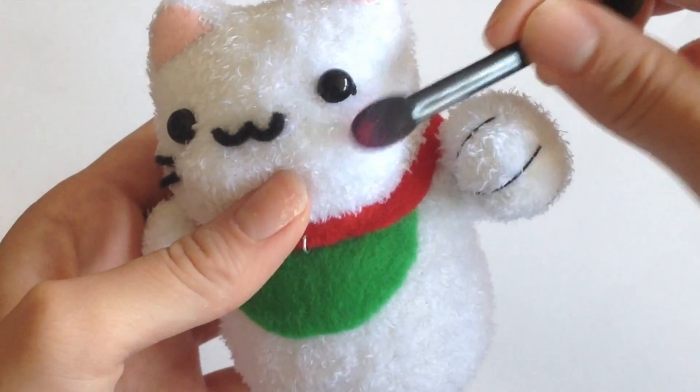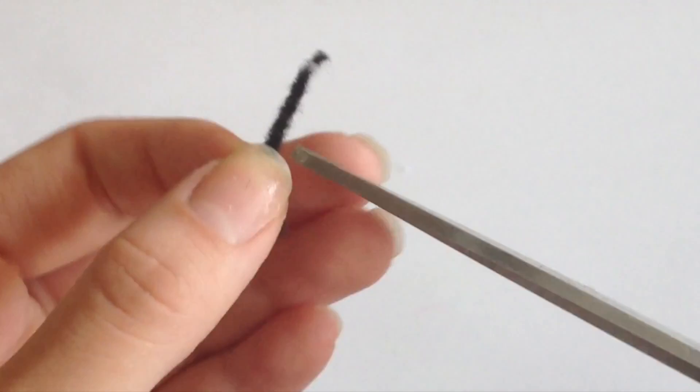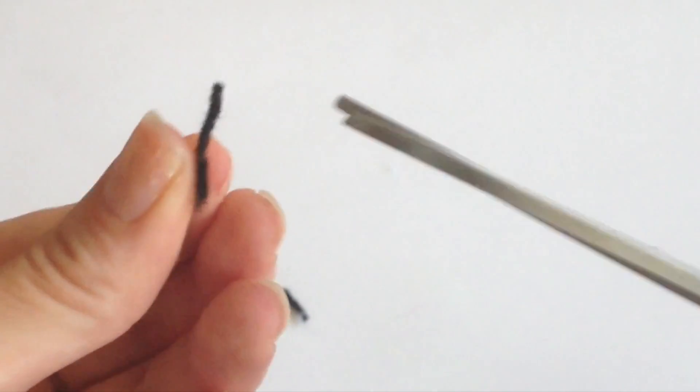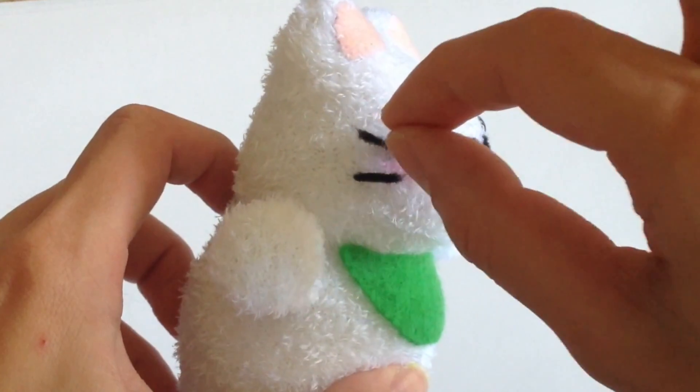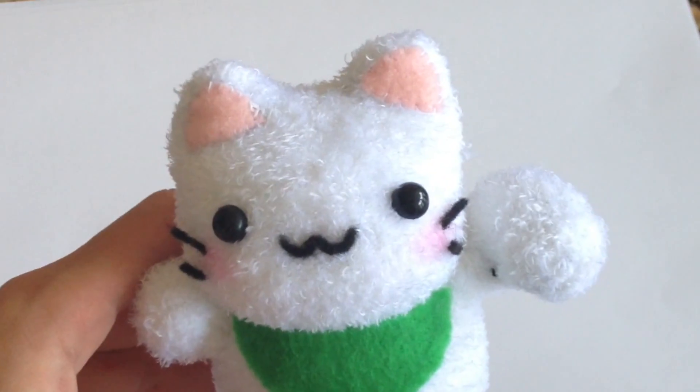For some added color I took some blush colored makeup and gave my cat actual blush and it will actually stain the fabric a nice little pink color, and I gave it some nice little whiskers with some black felt.